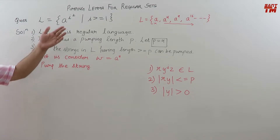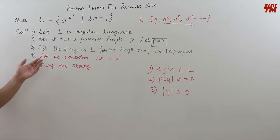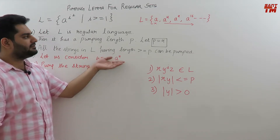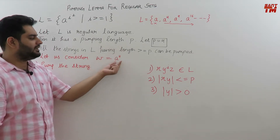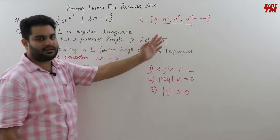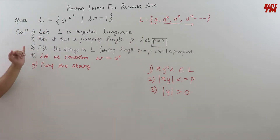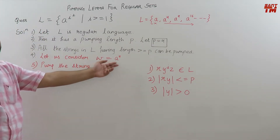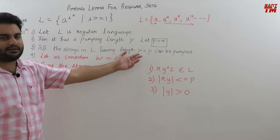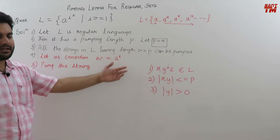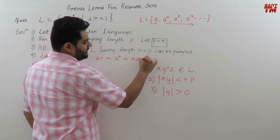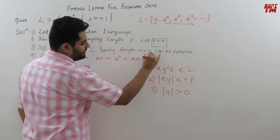So if all those strings can be pumped, let us consider one string out of that set. We have assumed some string to be a raised to the power 4. This string can be pumped because it has length equal to 4, and strings with length greater than or equal to 4 can be pumped easily. So this string is basically four a's.